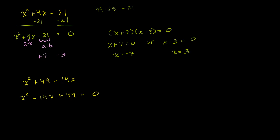We need two numbers whose product is 49 and whose sum is negative 14. Since the product is positive, they have the same sign, and since the sum is negative, they're both negative. Notice that 49 is a perfect square, and negative 7 times negative 7 is 49, while negative 7 plus negative 7 is negative 14. We have the pattern of 2 times the number and then the number squared — this is a perfect square.